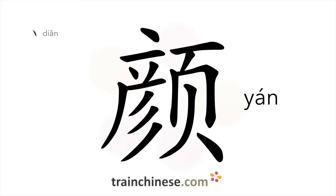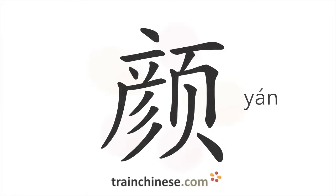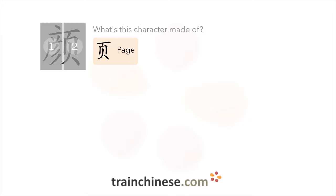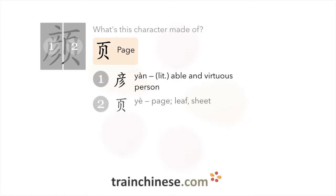So what components is this character made up of? This is the page radical. The components include 燃 and 夜.